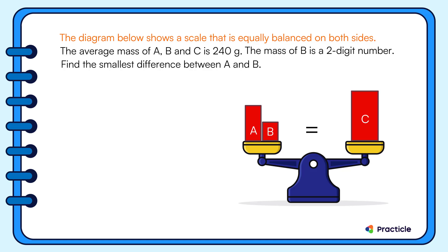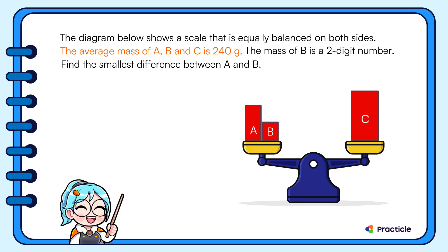So far so good? Next, we are given that the average mass of A, B and C is 240 grams. Since we have the average mass and we know the number of items, we can somehow guess that we need to find the total mass later on. But let's hold that thought for now, alright?